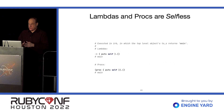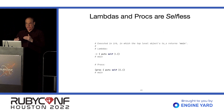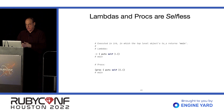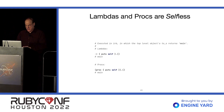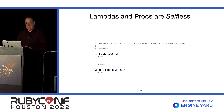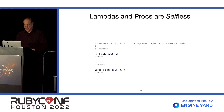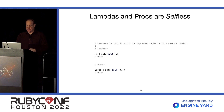Lambdas and Procs are selfless. If you say puts self, you won't get the Proc instance that the Lambda is — you'll get whatever object it happens to be in. In IRB, the name of the enclosing object is main, so that's why we see that there. Same thing with non-Lambda Procs.